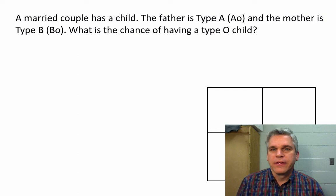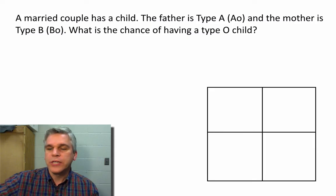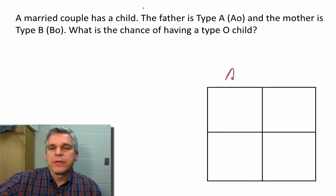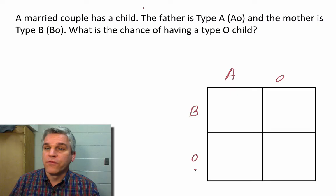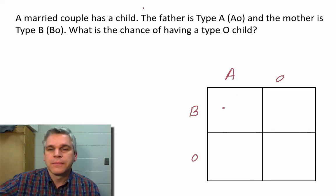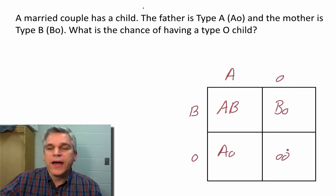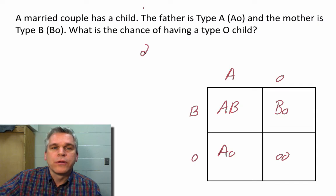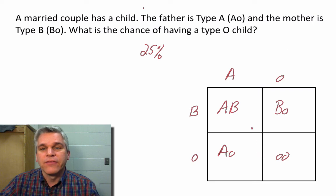A married couple has a child. The father is type A, so he's AO. The mother is type B, so she's BO. What is the chance of having a type O child? Let's separate the two alleles for each parent and fill out the Punnett square. If you said 25% chance, you would have been correct. In fact, there's a 25% chance for any of the blood types.